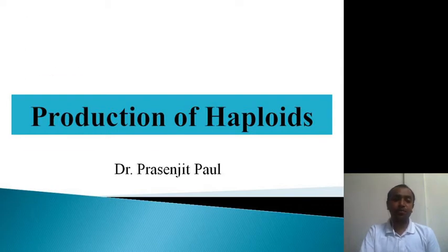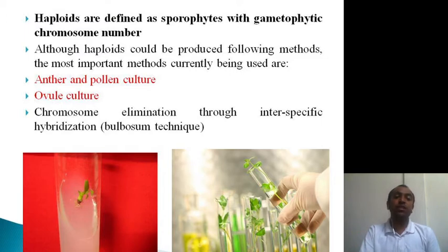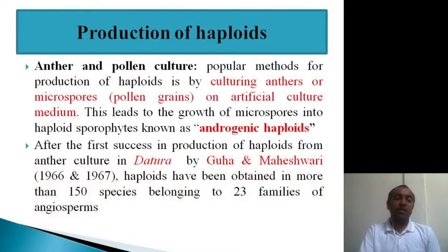Haploids can be produced through a variety of methods. The most common ones are anther and pollen culture, and ovule culture. Other methods include chromosome elimination through inter-specific hybridization, or the bulbosum technique.